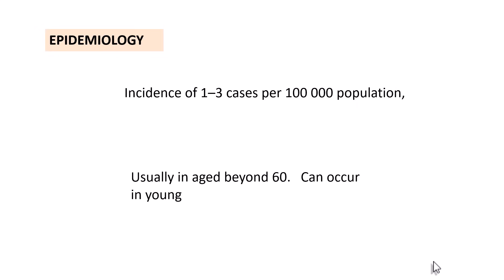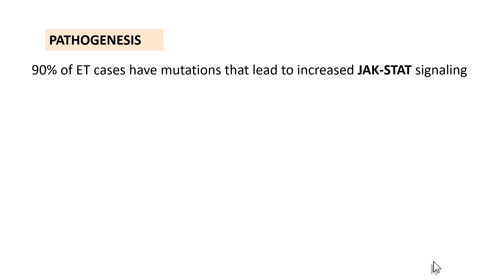The incidence of essential thrombocytemia is around 1 to 3 cases per 100,000 population, similar to polycythemia vera. It usually occurs in patients aged 60 and above, but it can also occur in younger individuals. Regarding pathogenesis, 90% of essential thrombocytemia cases have mutations that lead to increased JAK-STAT signaling, including mutation of JAK-2 kinase as well as other mutations.